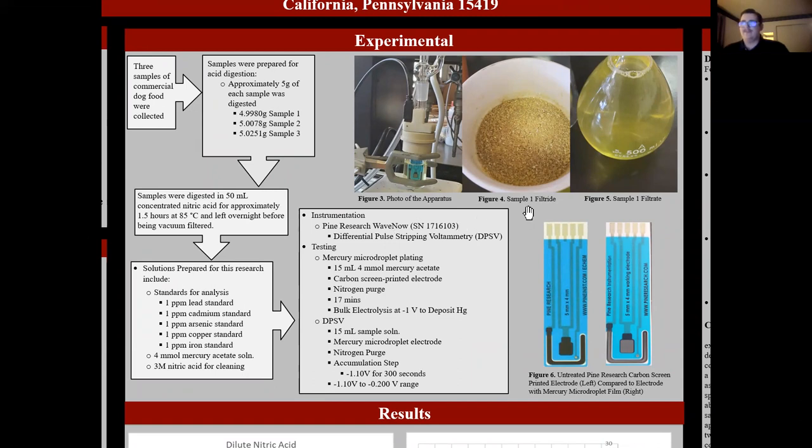As far as vacuum filtration in figures four and five, you can see the results of that. Figure four shows the filtride, the waste left on the filter paper after vacuum filtration. And in figure five, you can see the filtrate, the stuff that came over from the filtration.